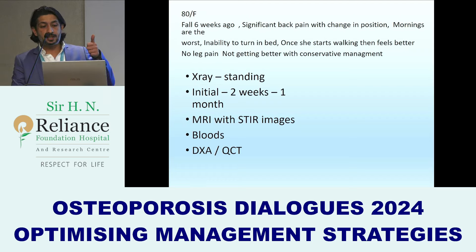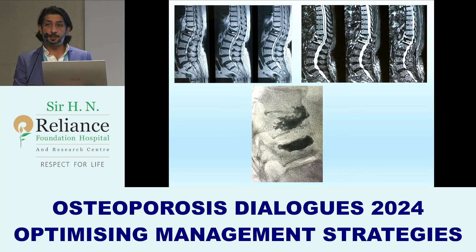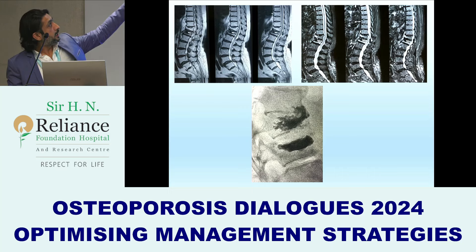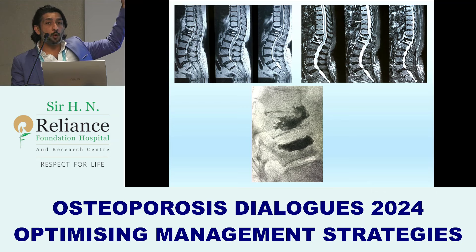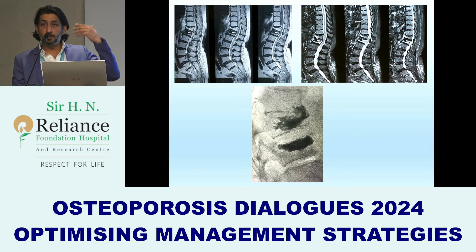Always get a standing X-ray, and as Arjun also pointed out, MRI with STIR images is very, very important. It also helps you to look at other fractures. If you see in this case on the T2 image on the left, the above fracture may look like an old fracture, but if you see on the STIR image you see some hyperintensity in that also. In those situations I would rather do a vertebroplasty at two levels.